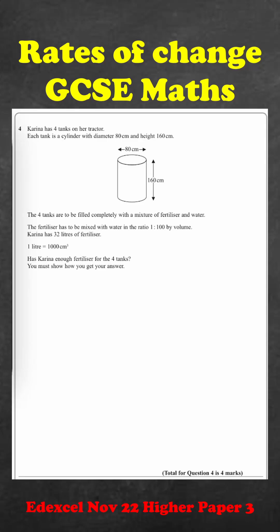Here is a question on rates of change. What we need to do first is work out the volume of one of these cylinders. So that's just going to be pi r squared times height.